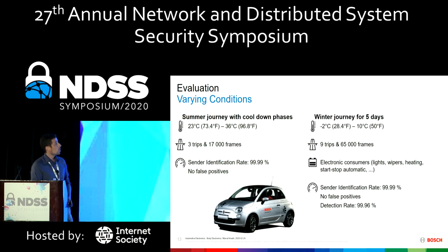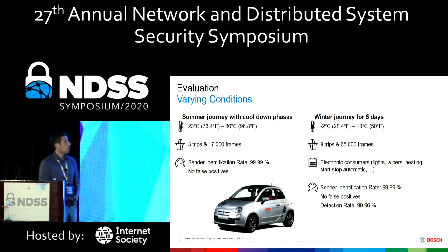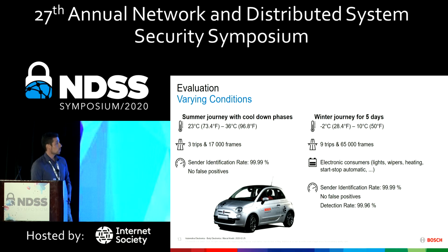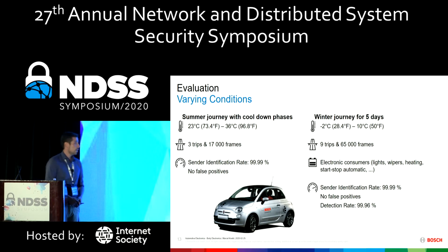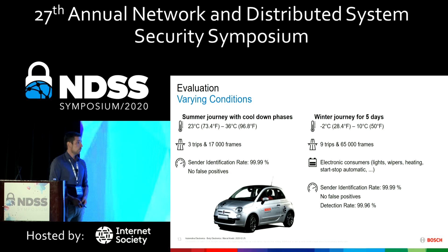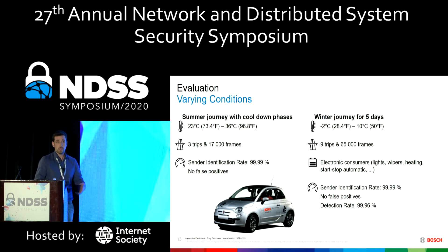Our second journey was during winter for five days, with slightly lower temperatures, nine trips, and 65,000 frames in total. We also looked at electronic consumers — lights, wipers, and the battery-draining start-stop automatic — to assess their influence on the signal. We still achieved high identification rates with no false positives. We also evaluated the detection rate by changing the origin of 10% of frames.